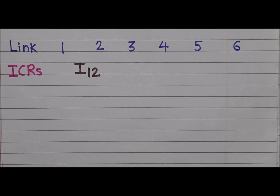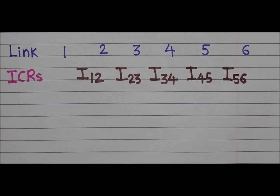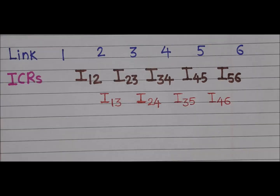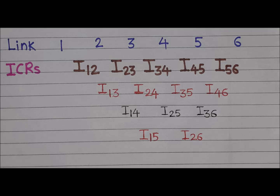In the first row we write link numbers 1, 2, 3, 4, 5, and 6. In the next row we write ICRs I12, I23, I34, I45, and I56. In the next row we write I13, I24, I35, and I46. Then I14, I25, and I36. Then I15 and I26, and in the last row we write I16.